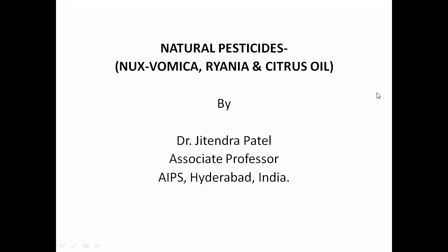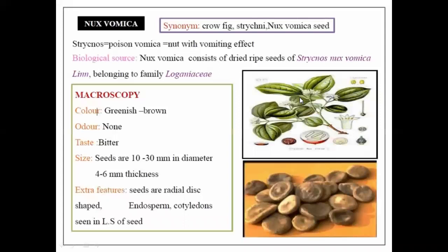So the first one is Nux vomica. In Nux vomica, generally the seeds are used. You can see in the image how the disc-shaped seeds are available — this is the schematic diagram of the Nux vomica plant. It is also known by different synonyms: crow fig, strychnos, or Nux vomica seed. The name strychnos means poison, and vomica means nut with vomiting effect, so it is also known as poison nut.